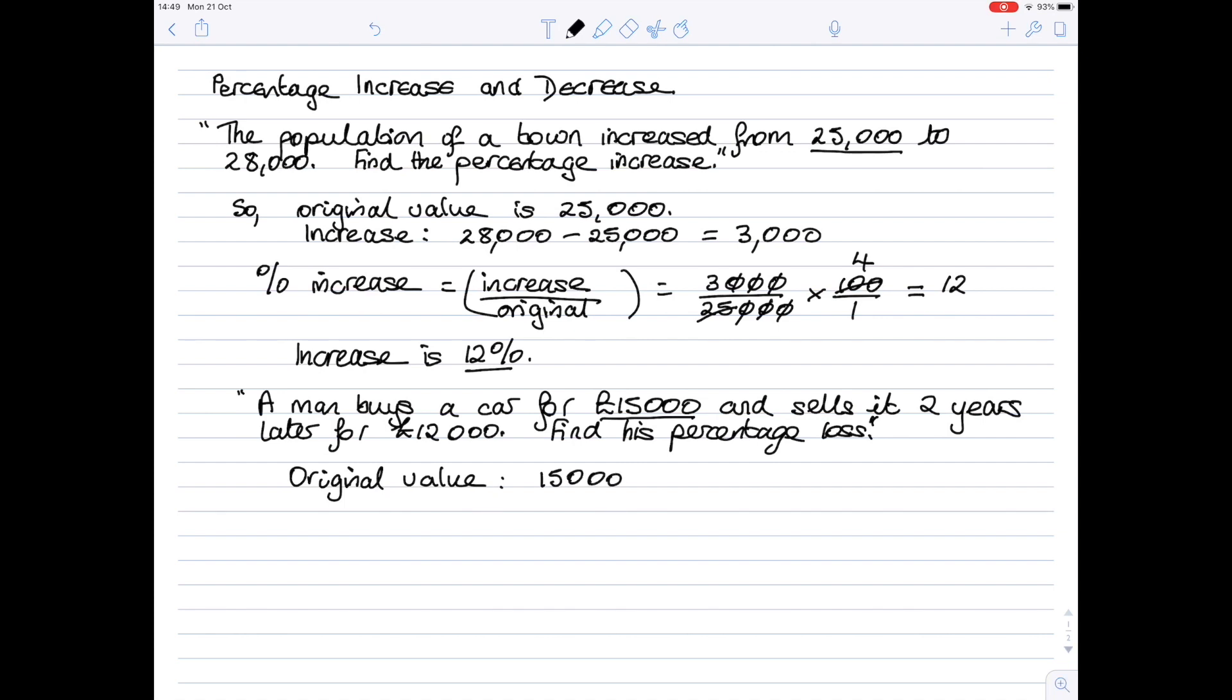So the original is £15,000. This time he is making a loss, so it's a loss or a decrease, and his loss is the £15,000 that he spent minus the £12,000 he got back. So it's £3,000.